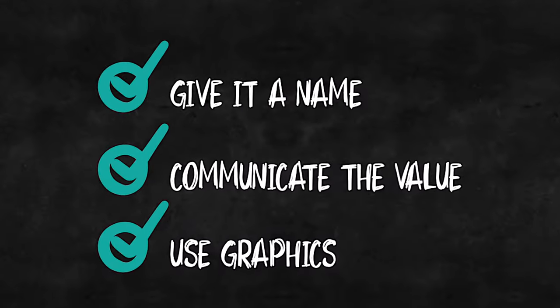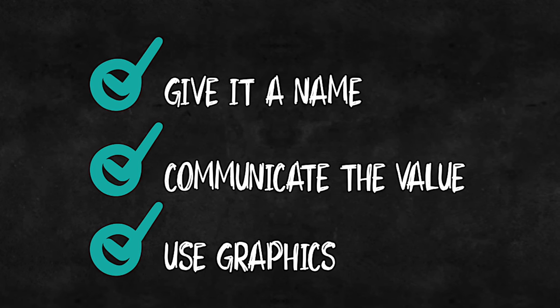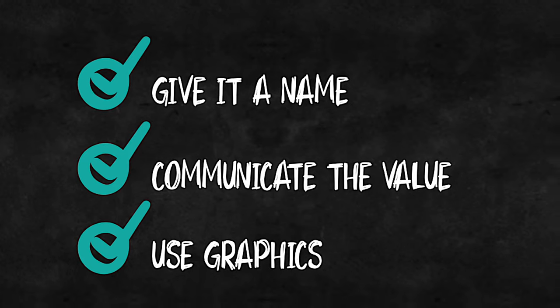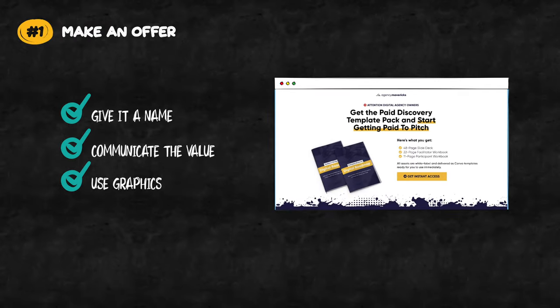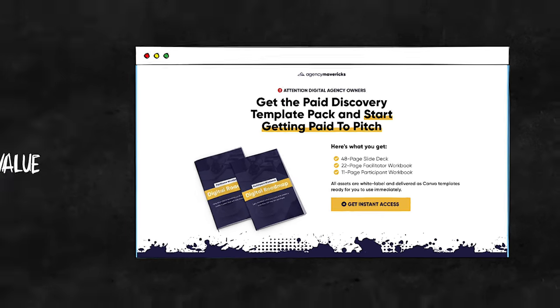The three key ingredients to turning your free download into an offer are: one, give it a name; two, communicate the value; and three, use graphics — so people know exactly what they're getting in exchange for their personal details. In this example for my own agency coaching business, we're giving away a slide deck and two workbooks. How well do you think this page would convert if it just said 'download these three PDFs so you can run paid discovery workshops'?